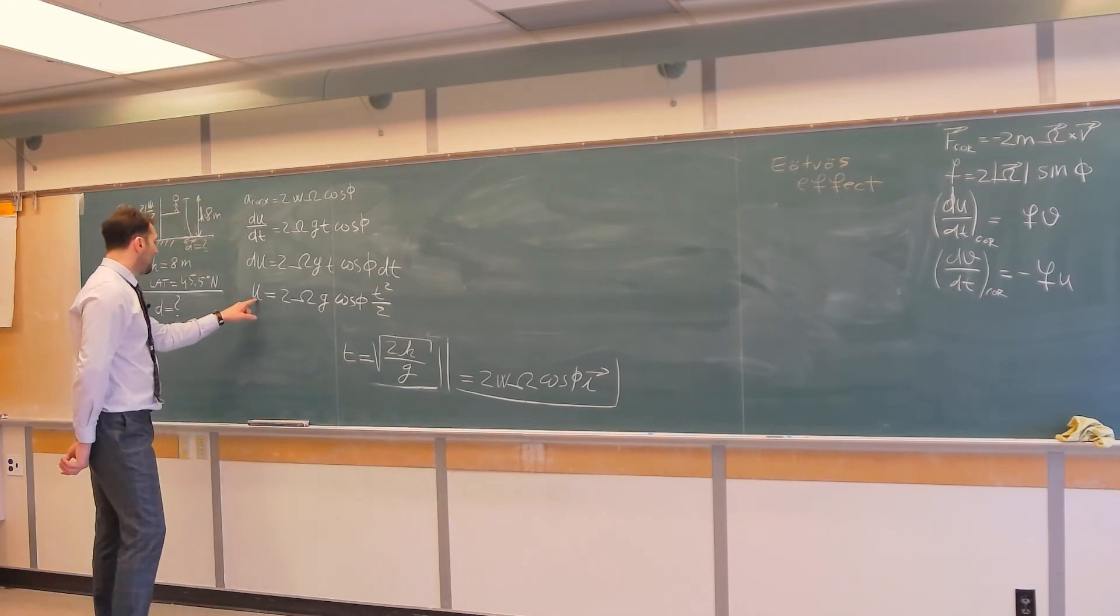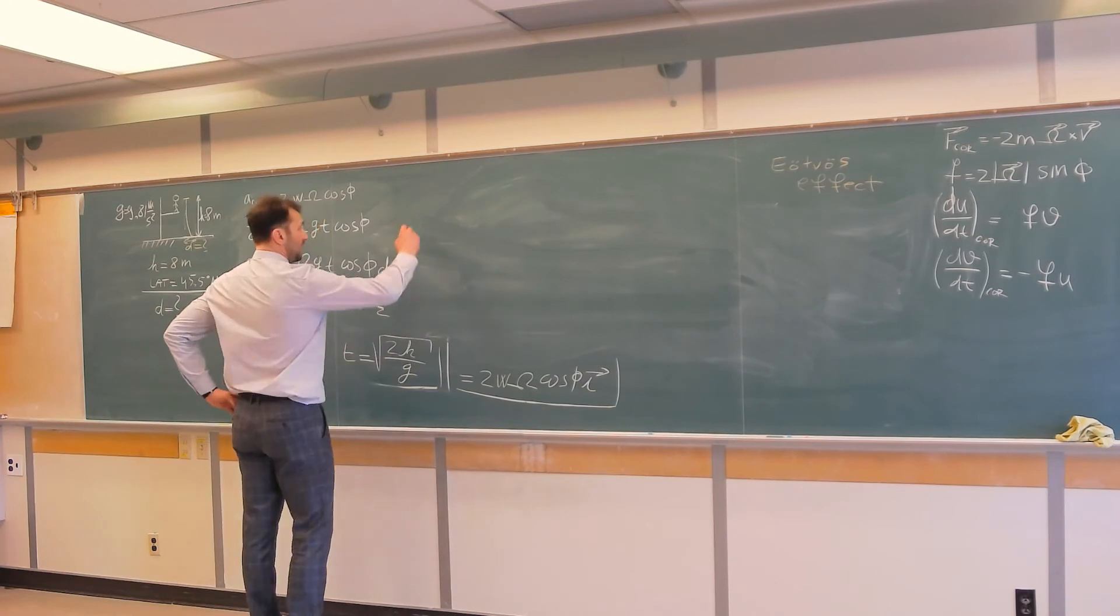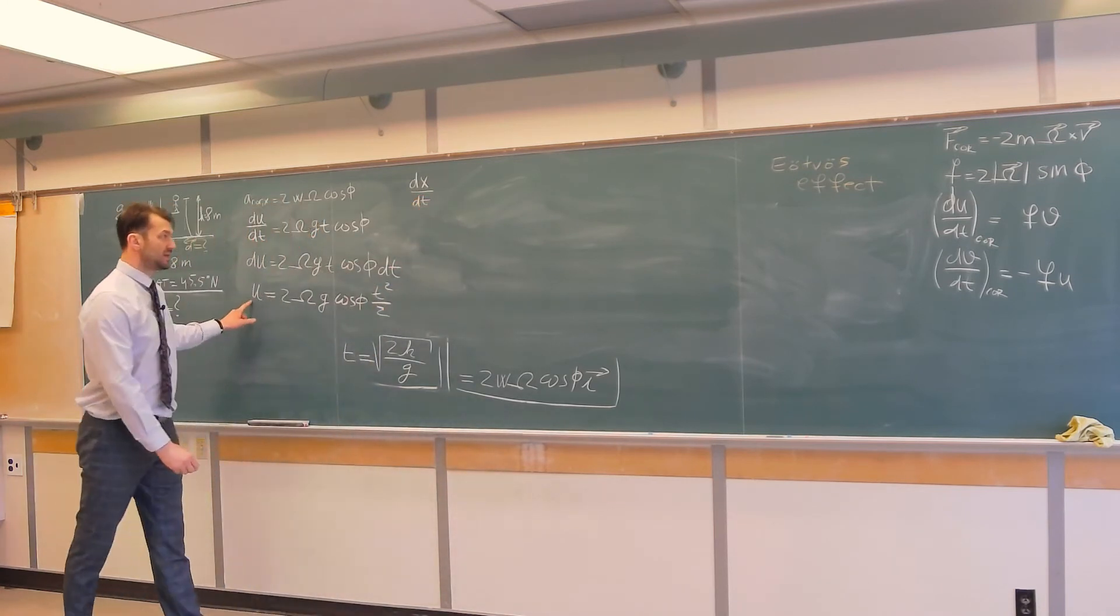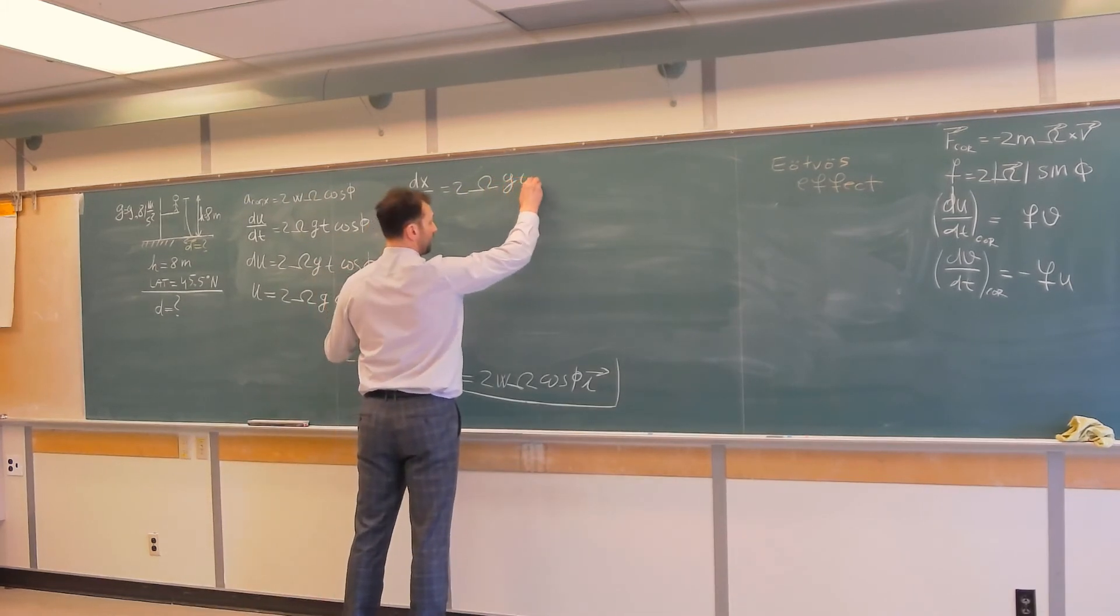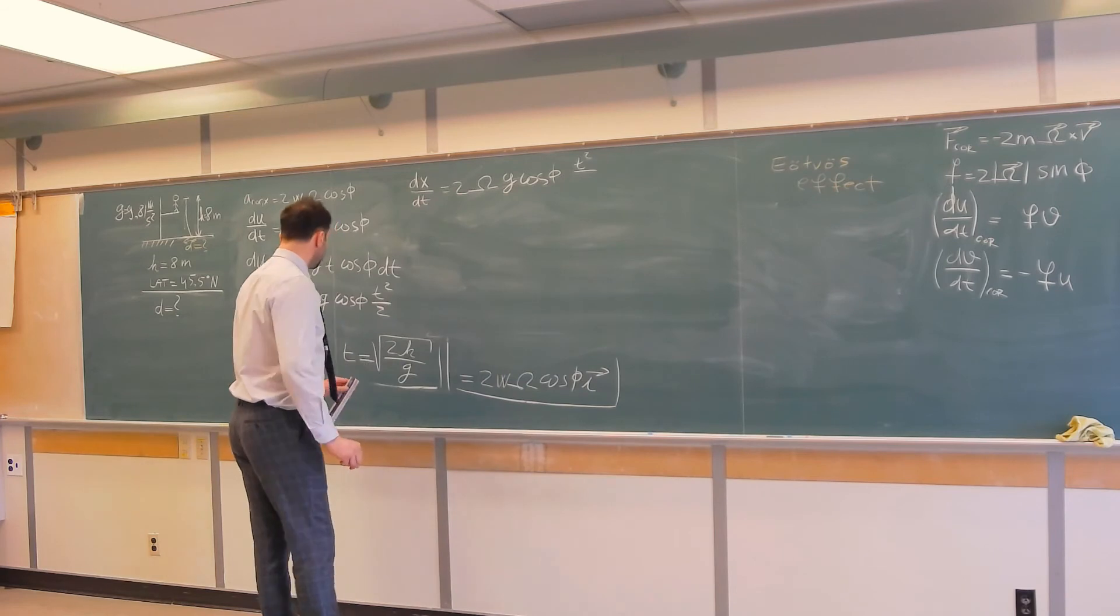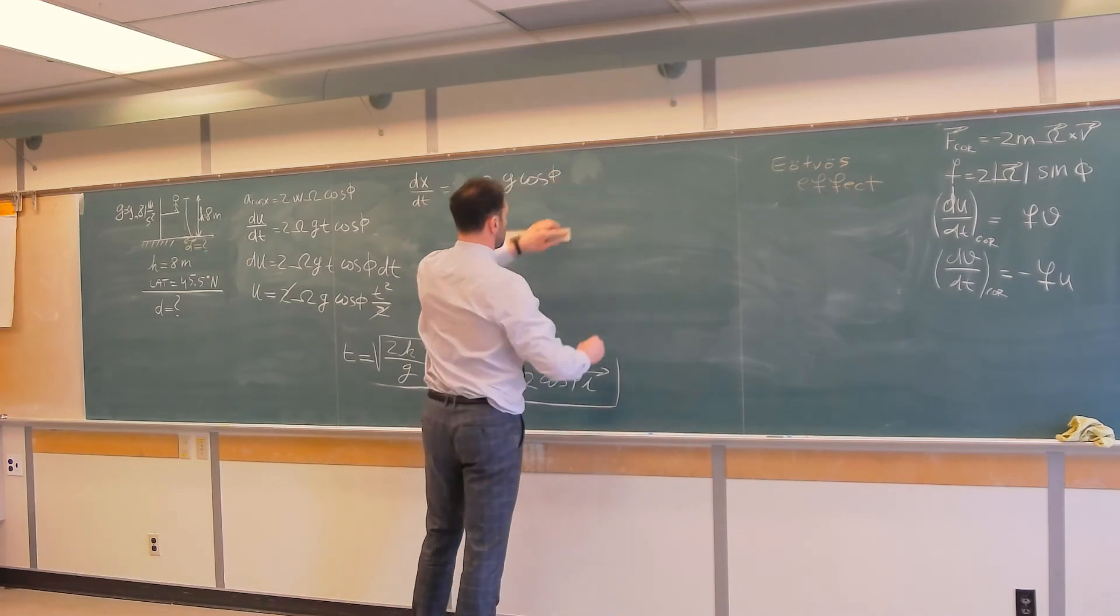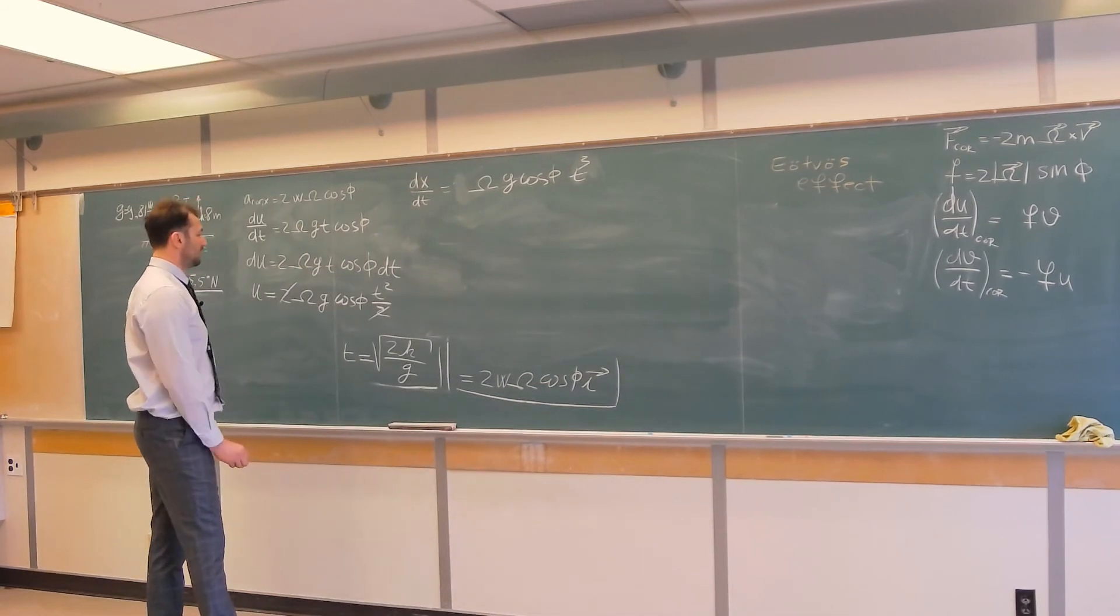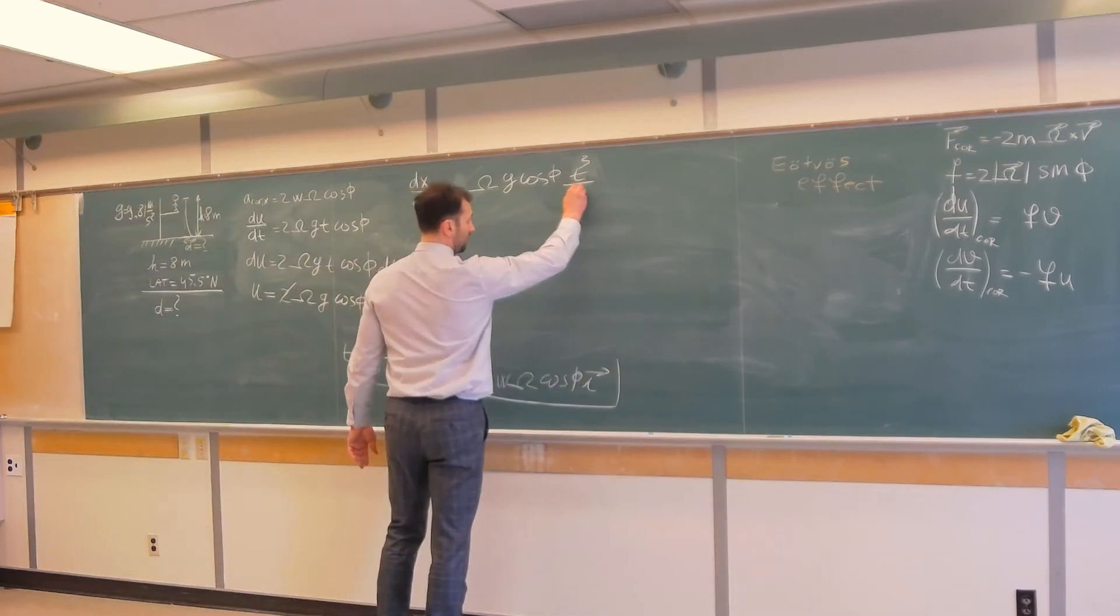But I need to integrate this one more time because I'm not interested in U, I'm interested in this d. I do that by knowing that dx/dt equals U. And that equals 2 omega g cosine phi t squared over, but over nothing because I will cancel this two and this two. So I will only have here t cubed over three.